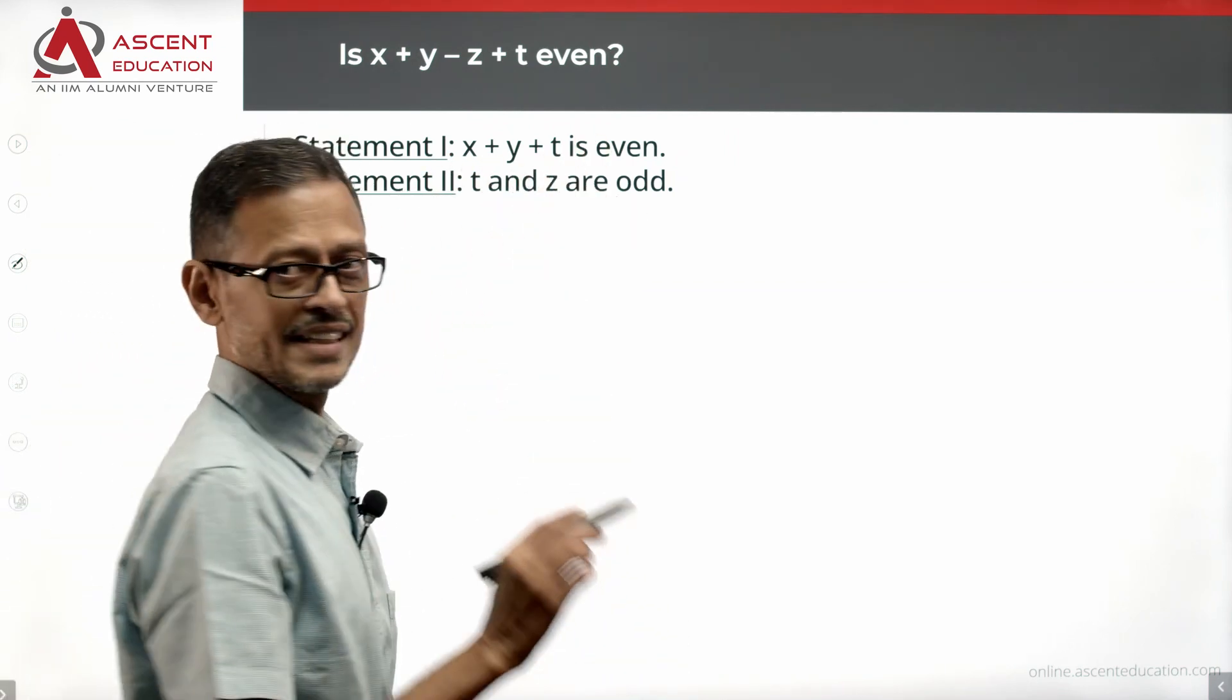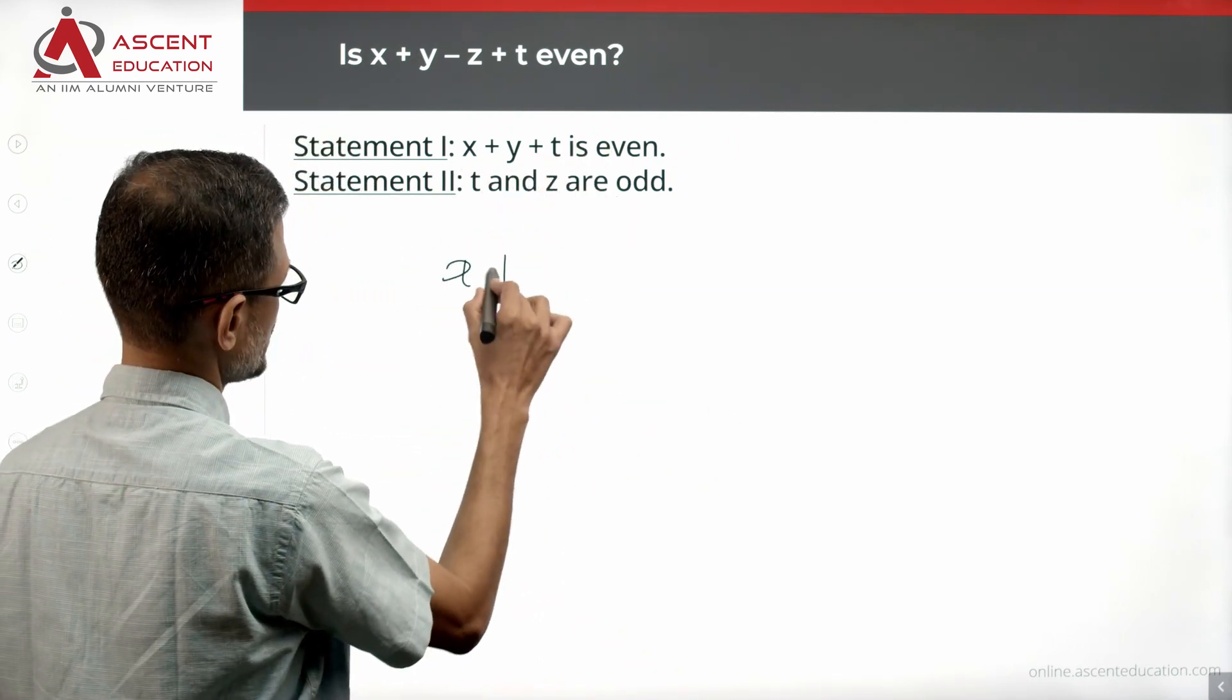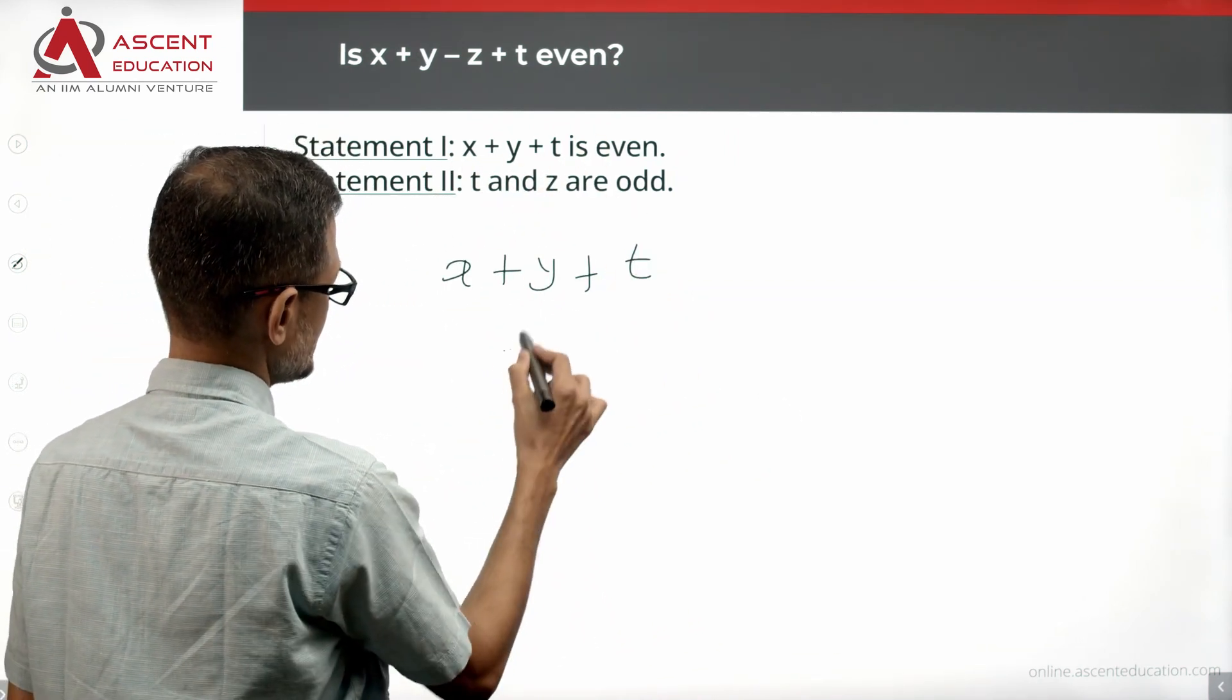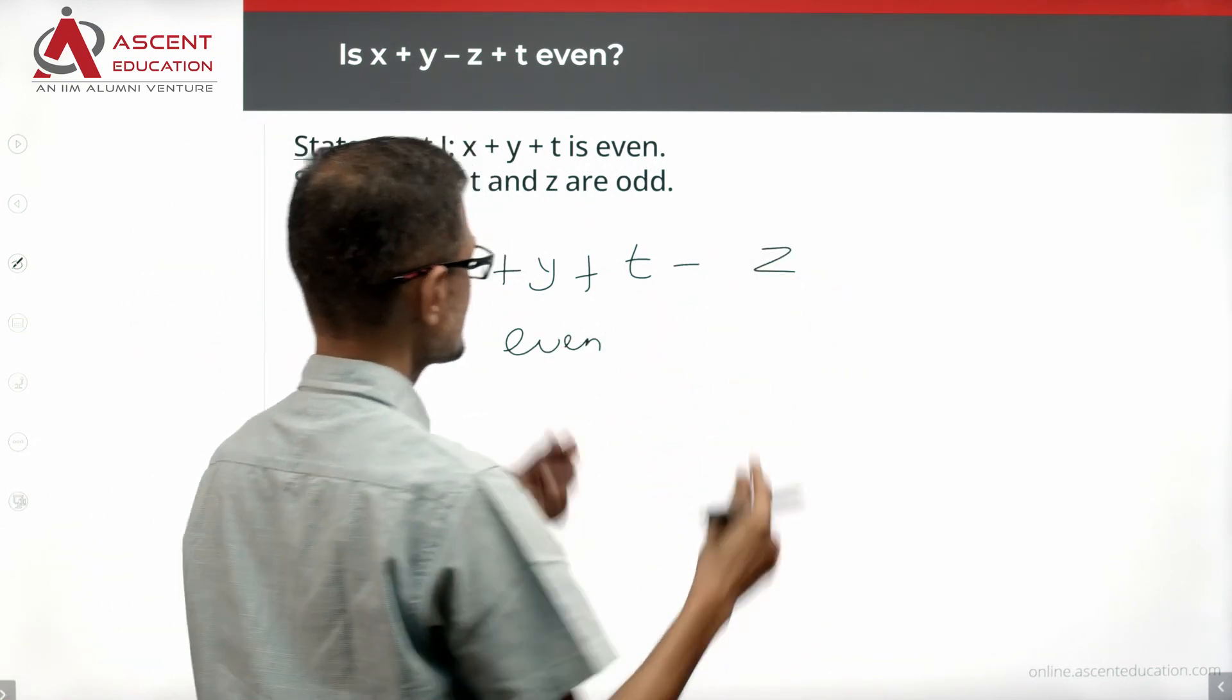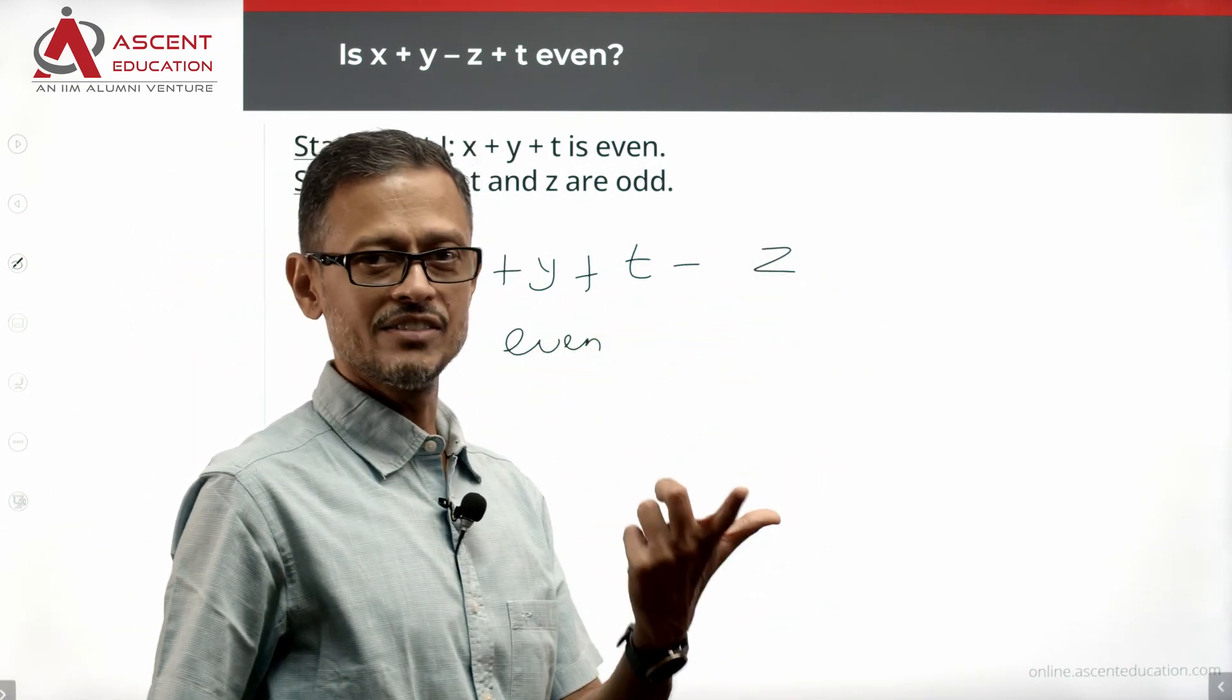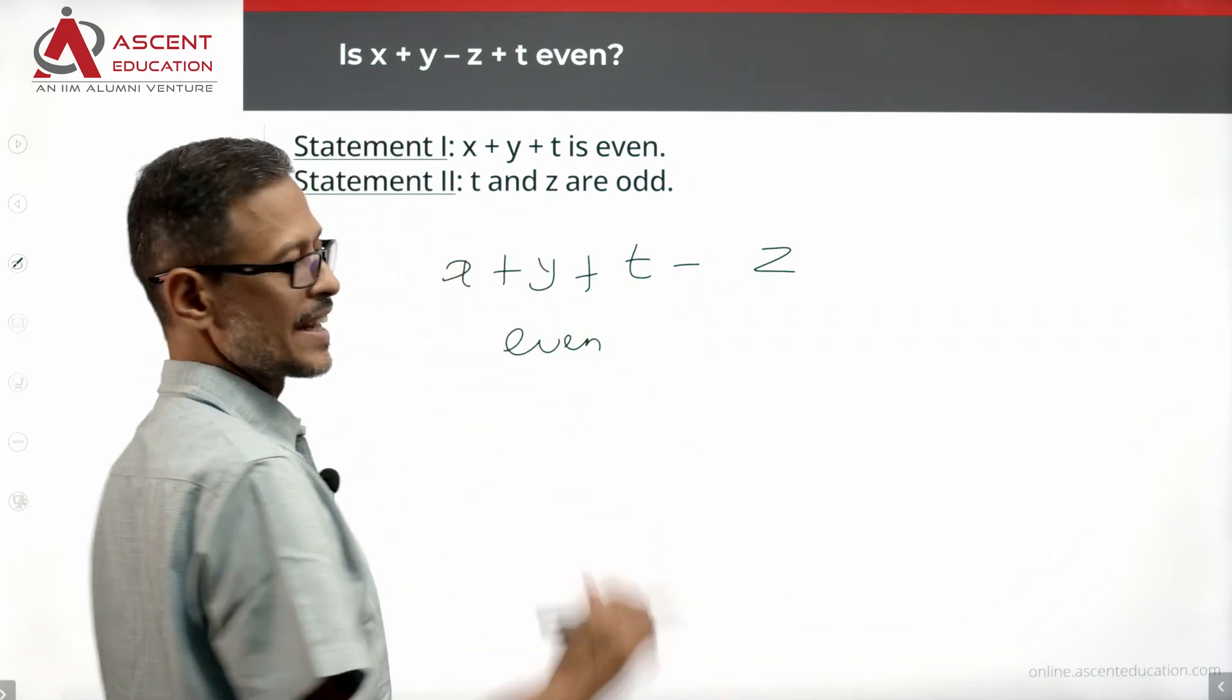X plus Y plus T is even. So T and Z are odd.